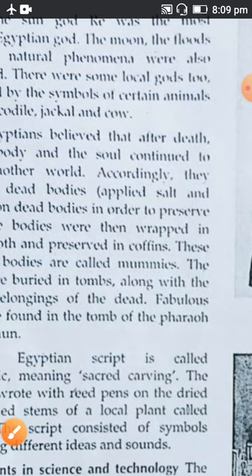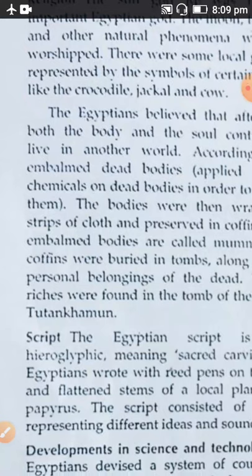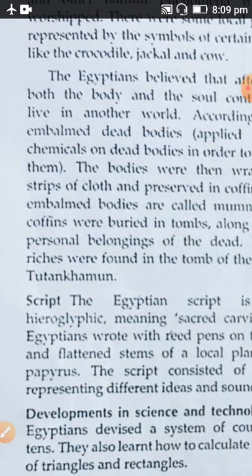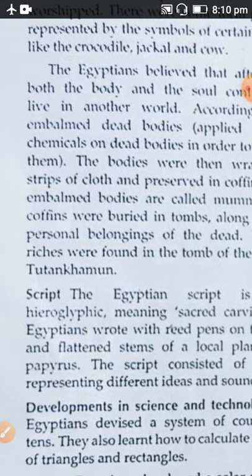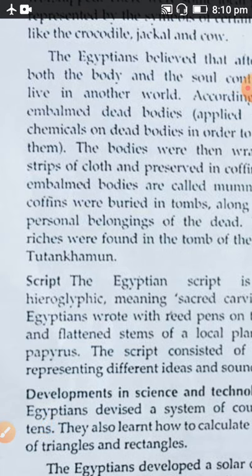Accordingly, they embalmed dead bodies — have you heard about mummies? They applied salt and chemicals on the dead bodies to preserve them for many years. The bodies were then wrapped in strips of cloth and preserved in coffins. These embalmed bodies are called mummies. The coffins were buried in tombs along with the personal belongings of the dead person, because they believed there is life — body and soul — after death.